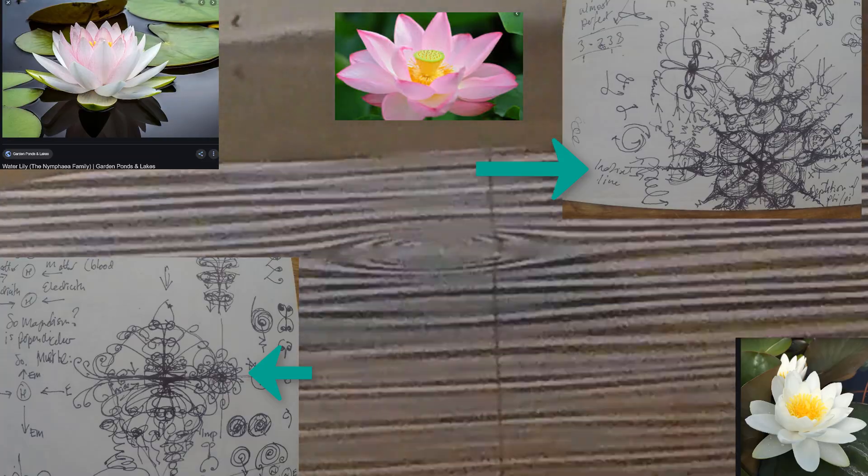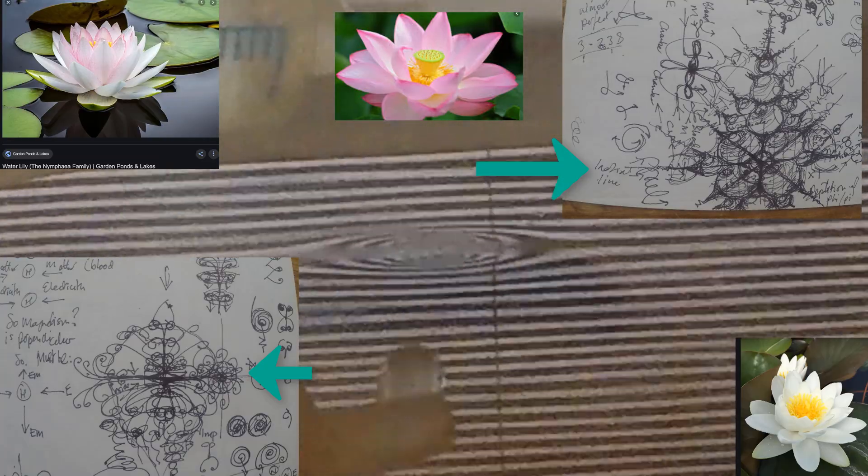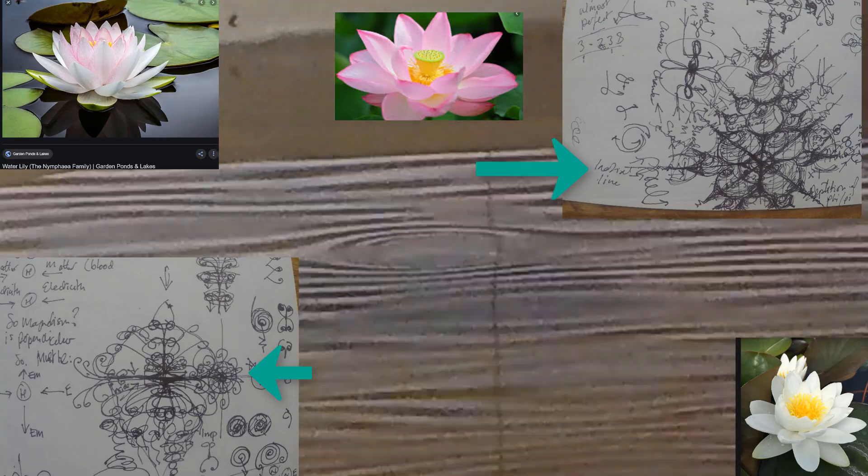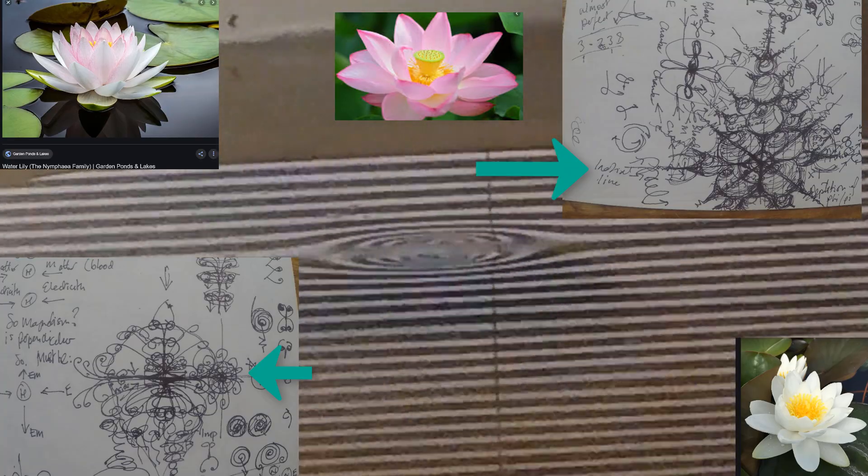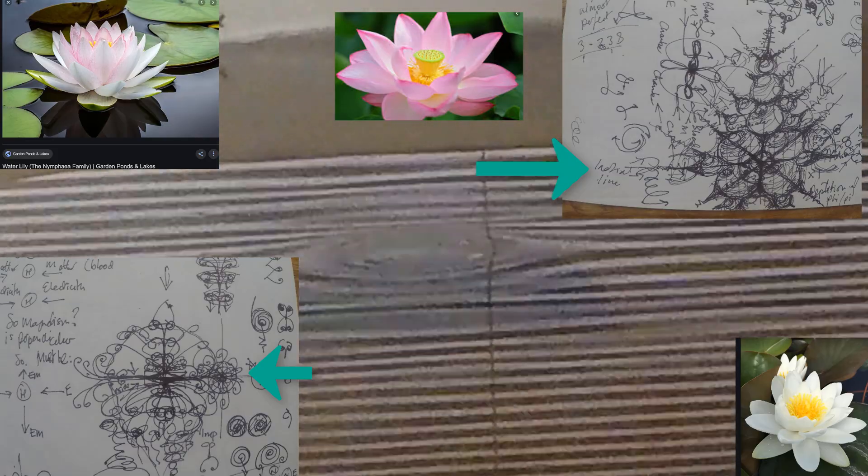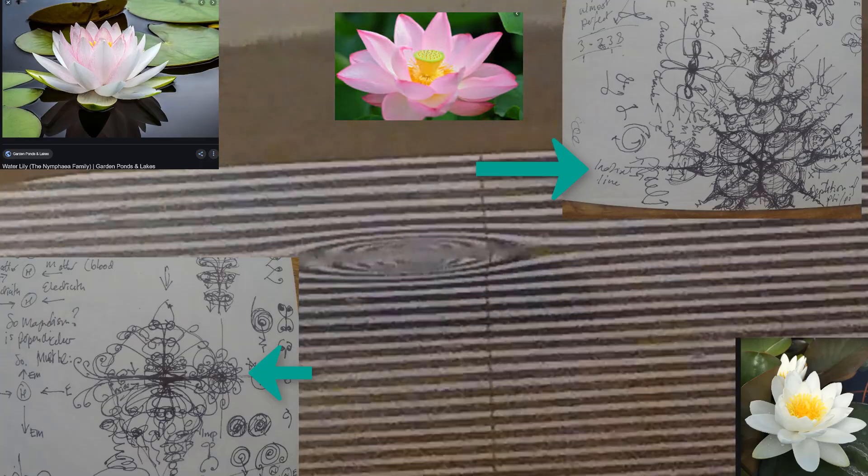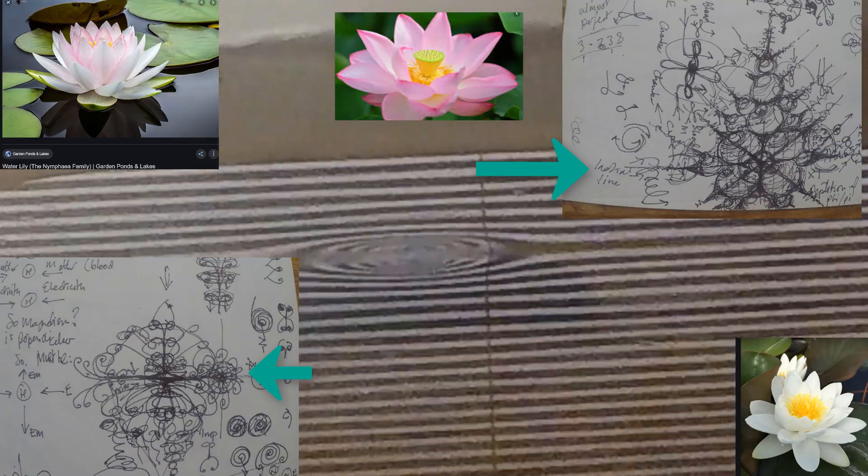Now I'm just going to fast forward the video because we have the flower there already but I want to get it to where it's like a lotus. So I'm just going to fast forward the video because basically all I'm doing is adding more water just a few drops at a time.